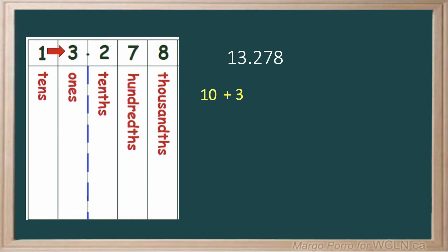The 2 is the first place after the decimal, the tenths place. So you write a 0 and a decimal point before you put the 2.